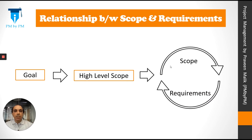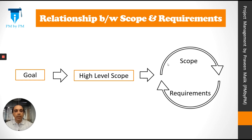So what's the relationship between scope and requirements? Initially a goal is defined and a high-level scope is prepared. Using the high-level scope, some initial requirements are defined and scope is elaborated further. The scope and requirements go in a cycle — as more and more requirements come in, scope is defined further.